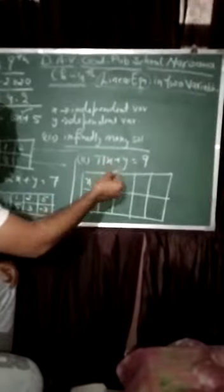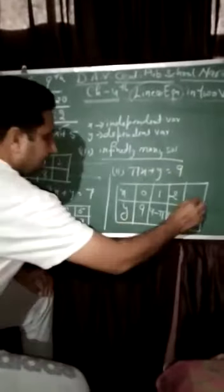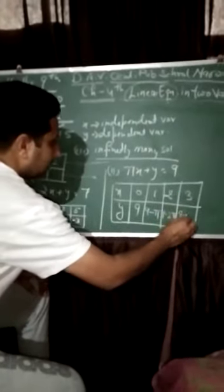Put x equal to 0, y is equal to 9. If you put x equal to 1, pi will go to the other side, we get 9 minus pi. We put x value 2, we get 9 minus 2 pi. Similarly, x equal to 3, 9 minus 3 pi.